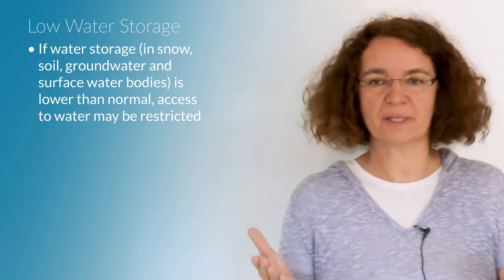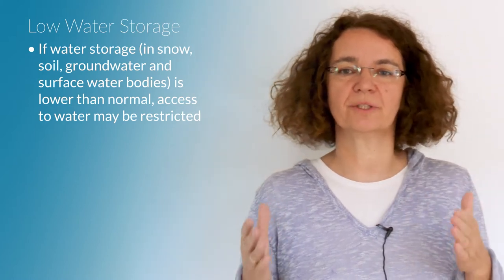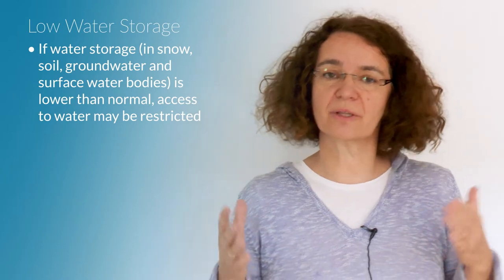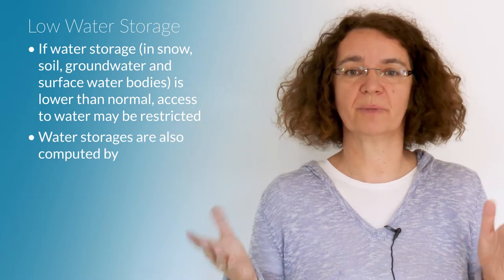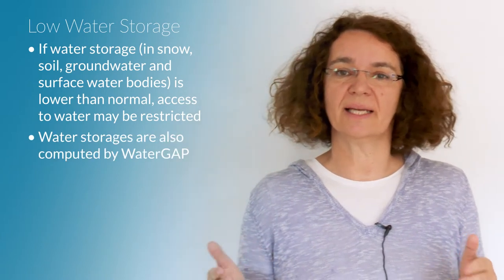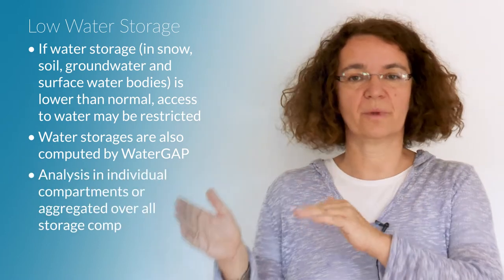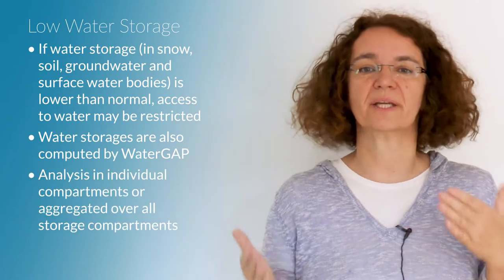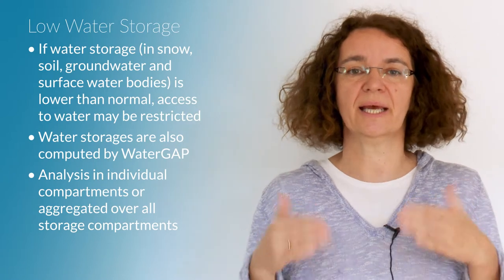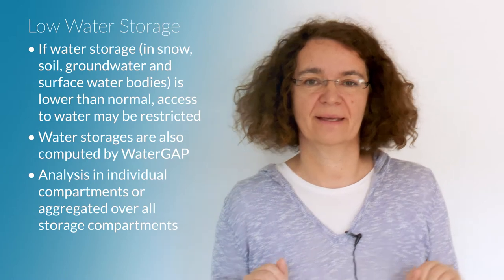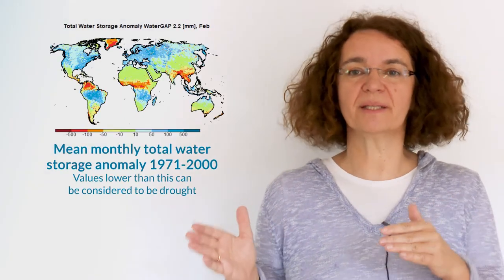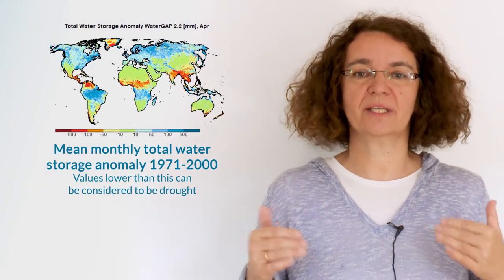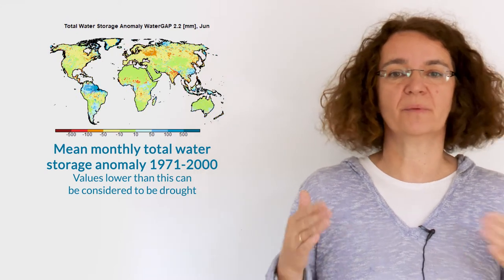For hydrological drought assessment it's important to look at anomalies of water storage. One can analyze water storage in the individual compartments soil, groundwater and so on but it's also useful to aggregate over all the storage compartments and compute temporal variations of total water storage.